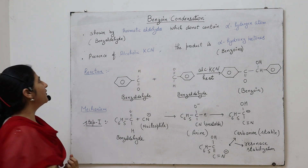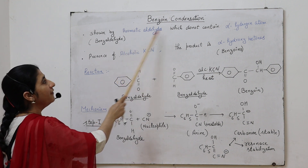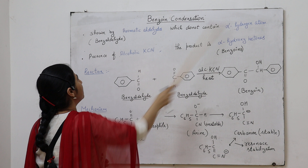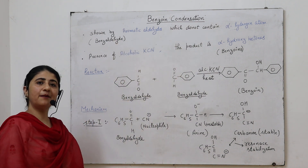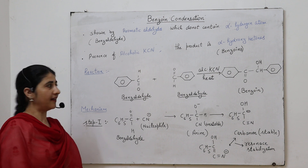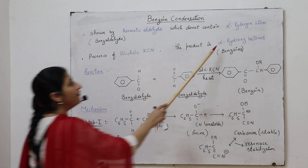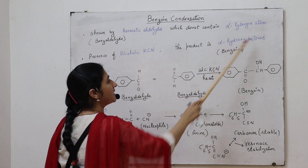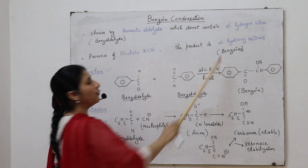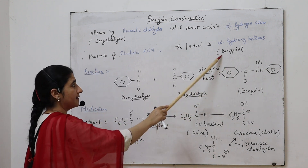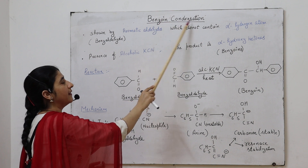Benzoin condensation is a reaction shown by aromatic aldehydes which don't contain alpha hydrogen atoms, such as benzaldehyde. It takes place in the presence of alcoholic KCN, and the product obtained during this reaction is alpha-hydroxy ketones, which are also known as benzoins. So that is why this reaction is named benzoin condensation.